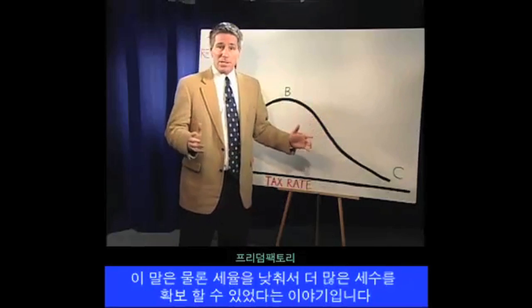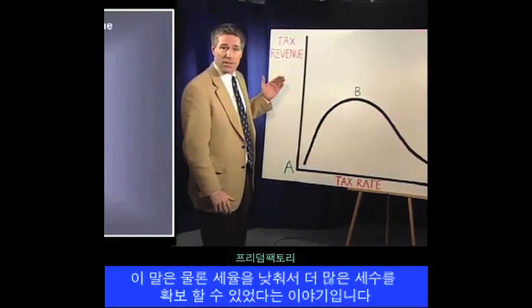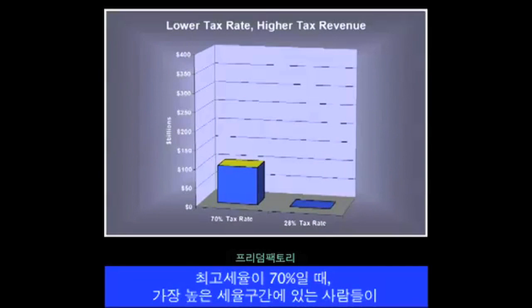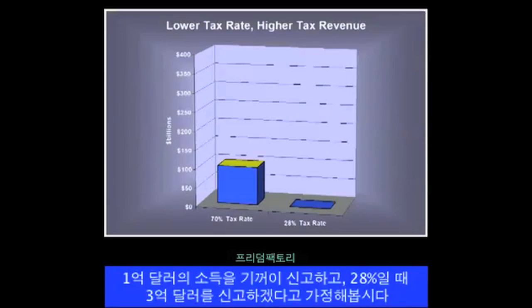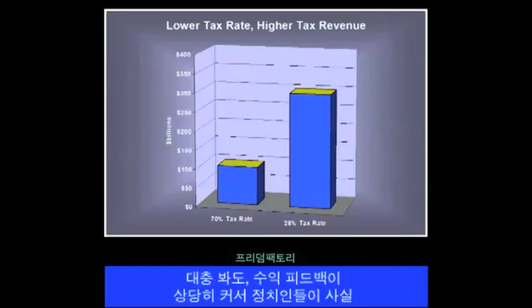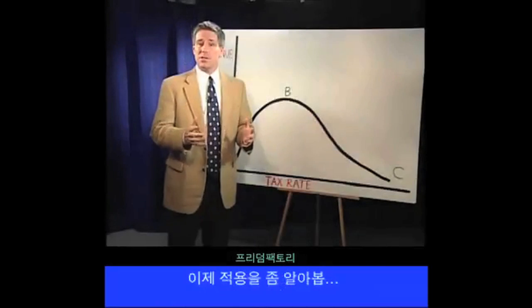When tax rates got this high, Art explained, governments could lower the rates and actually collect more revenue since people would have more incentives to both earn additional income and to report that money to the IRS. In other words, the 70% tax rate was so high that we were on the wrong side — the downward sloping side — of the Laffer Curve, somewhere between points B and C. This meant that it was possible to lower the tax rate and collect more tax revenue. For example, people in the highest tax bracket might report $100 billion of taxable income at a 70% rate, but $300 billion at a 28% rate — so the revenue feedback is large enough that politicians get more tax revenue.